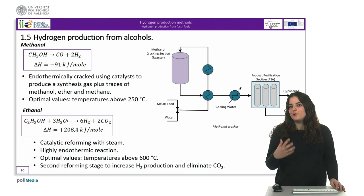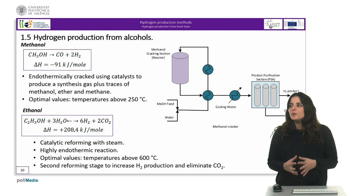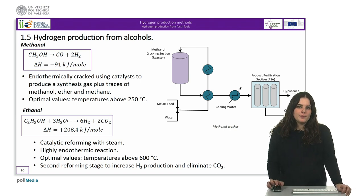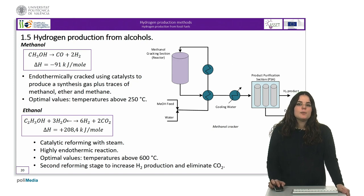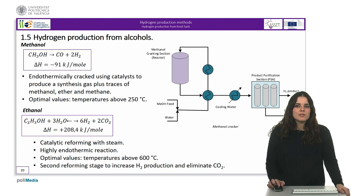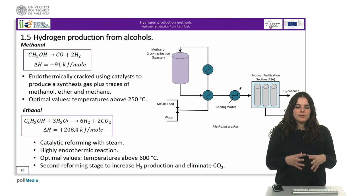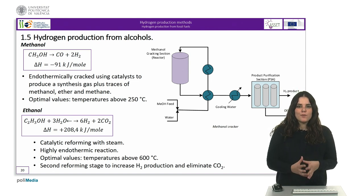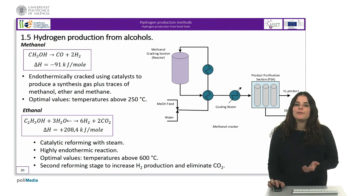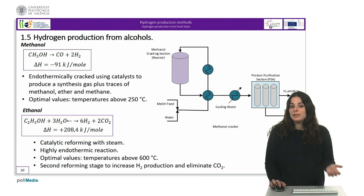The last method to produce hydrogen from fossil fuels is production from alcohols. Methanol can be endothermically cracked using catalysts to produce a synthesis gas plus traces of methanol, ether and methane. A two-stage membrane separation system extracts hydrogen from the CO-rich fuel, which is burned in the cracker. The catalytic decomposition of methanol via steam reforming takes place in ethanol fuel cells at temperatures higher than 250 degrees Celsius. Photocatalytic methods can also be used to break down methanol.